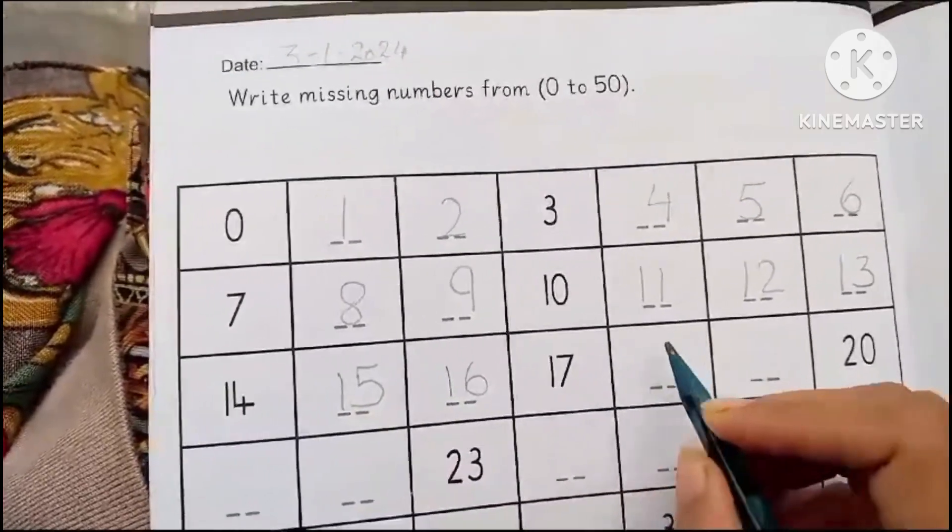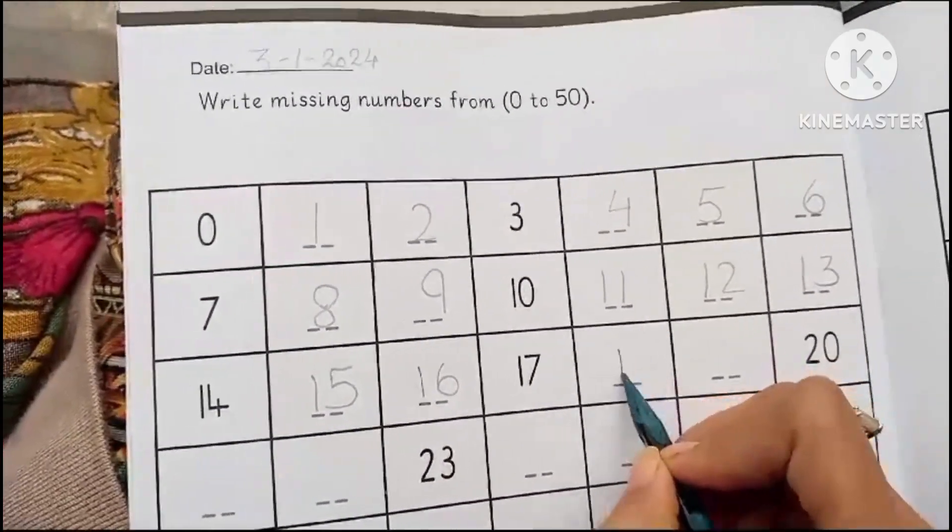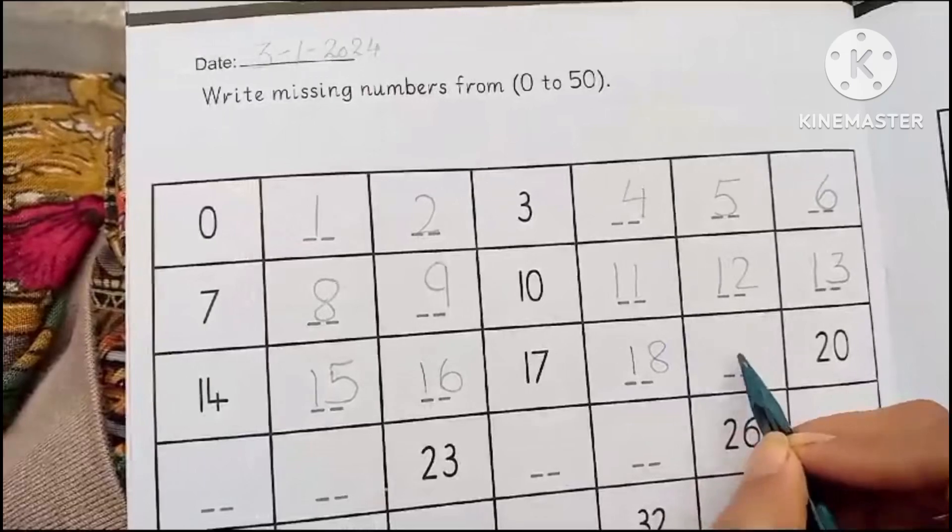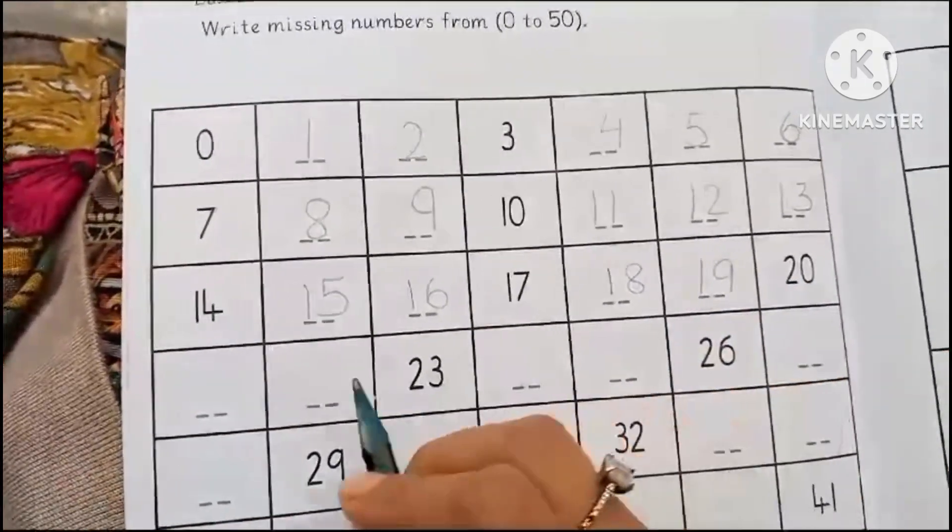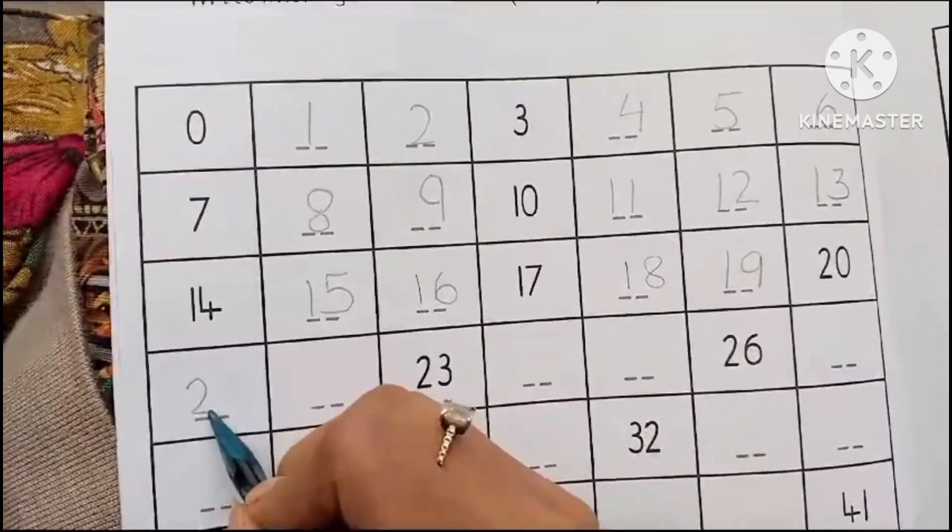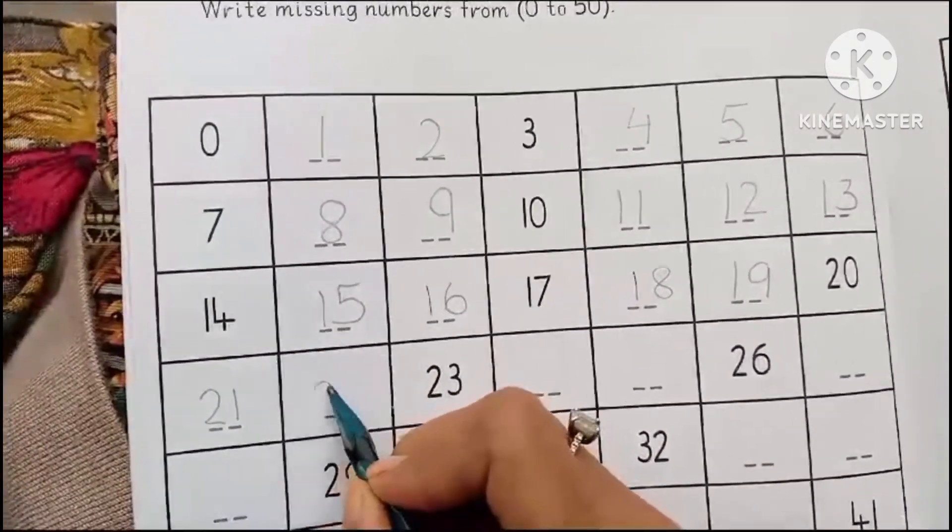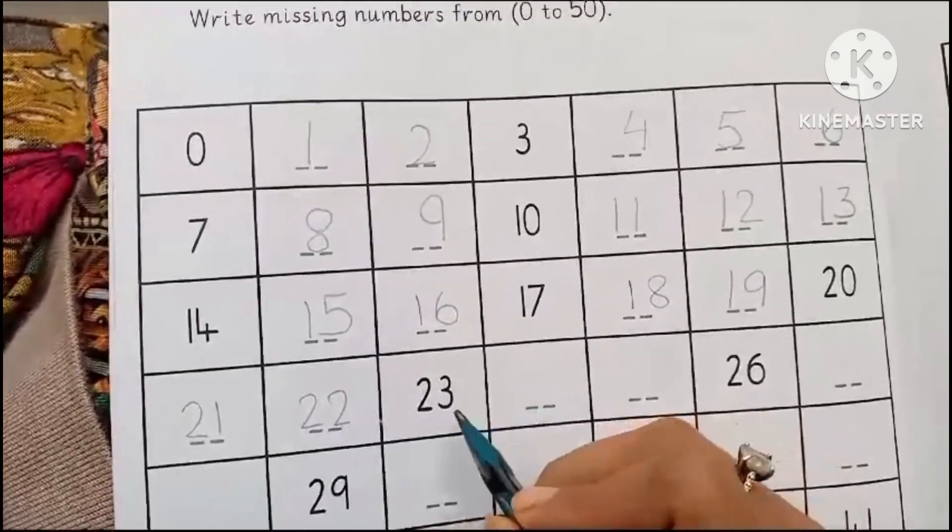Seventeen, eighteen, nineteen, twenty, twenty-one, twenty-two, twenty-three.